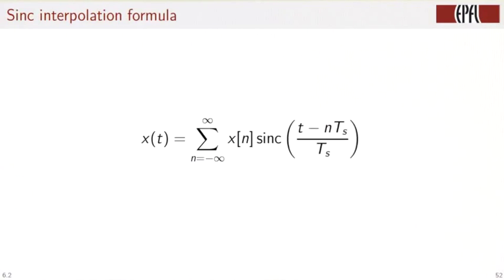So we have a sinc interpolation formula as a limit of Lagrange interpolation. Namely, that x of t is equal to the sum of xn sinc of t minus n ts divided by ts. This is a very elegant and very powerful formula.